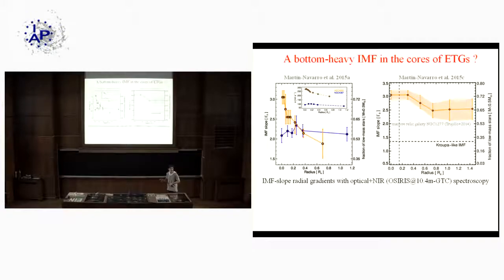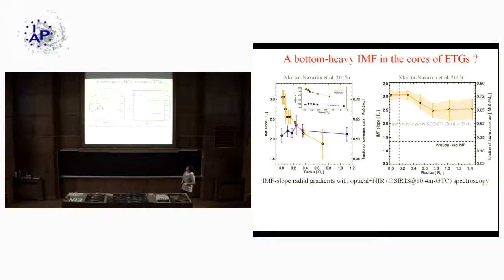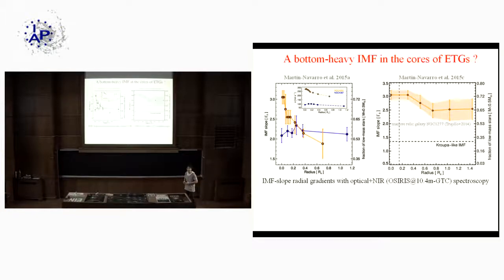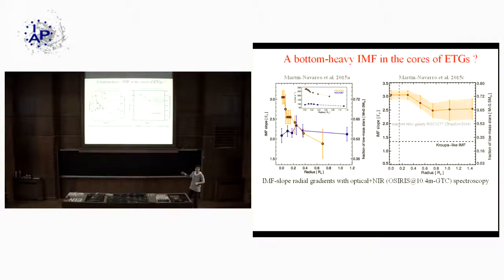At the same time we studied NGC 1277, a very interesting system believed to be one of the few relic galaxies at redshift zero — a counterpart of the massive compact red nuggets observed at high redshift. In this kind of galaxy, although massive, we did not see much variation with radius, and the distribution was almost bottom-heavy everywhere in the galaxy. This fits a two-phase formation scenario where a compact core forms with a bottom-heavy IMF at high redshift, then the galaxy accretes Kroupa-like material in the outer part for lower-mass galaxies, resulting in a nice IMF gradient in a massive nearby system.